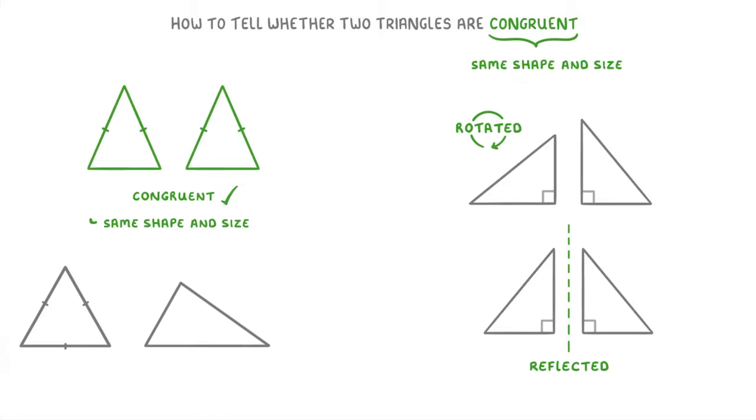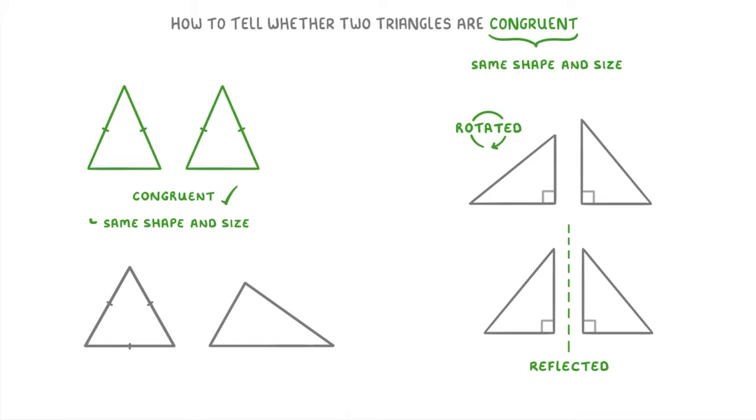On the other hand, if we had these two triangles, these ones aren't congruent, because they're completely different shapes and sizes.